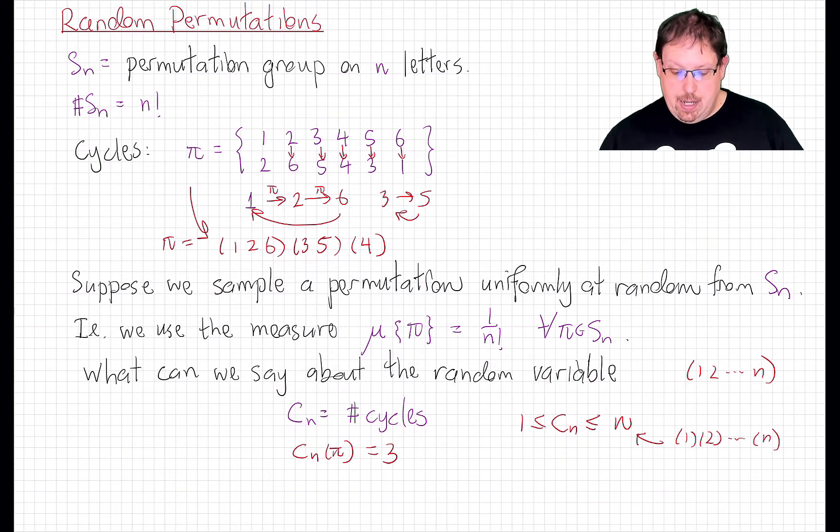Now, if this were an undergraduate class, we could now proceed to try to calculate the expected value and maybe even the variance of this random variable, C_n. These are good problems in the method of indicators, and in fact are the sorts of calculations that come up in the coupon collector problem. But we'd like to be more precise. We'd like to understand what the distribution of this random variable looks like for large n.